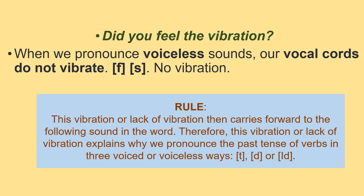No vibration for the voiceless sounds. We have a rule: this vibration, or lack of vibration, carries forward to the following sound in the word. Therefore, this voiced or voiceless quality explains why we pronounce the past tense of verbs in three different ways — /t/, /d/, or /ɪd/.